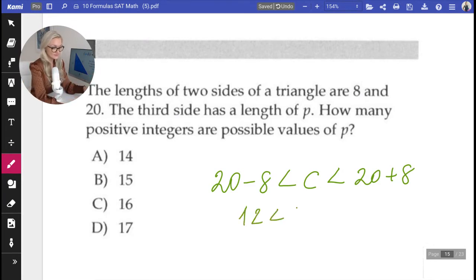12. So your C is trapped between 12 and 28, but it cannot equal 12 or 28. And they're asking you about positive integers. So C could be anywhere from 13 to 27.